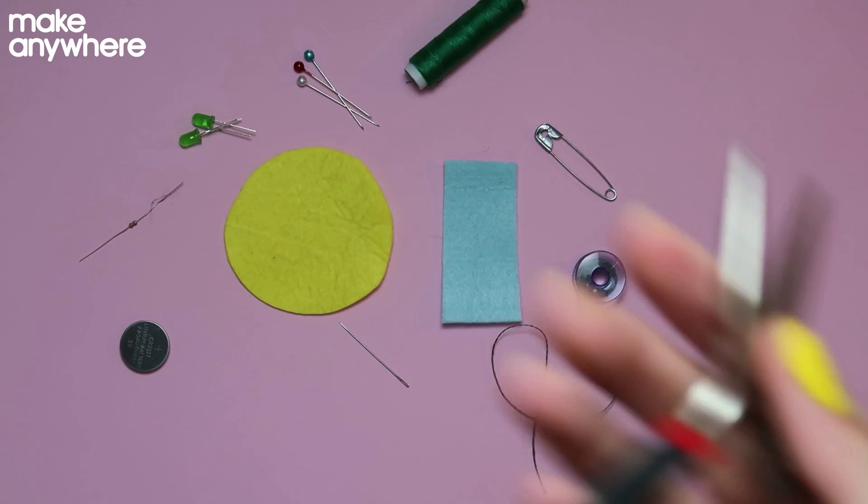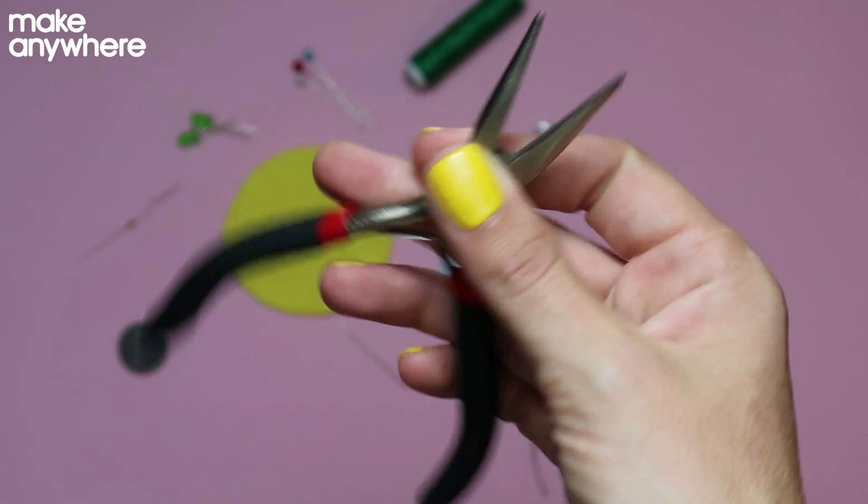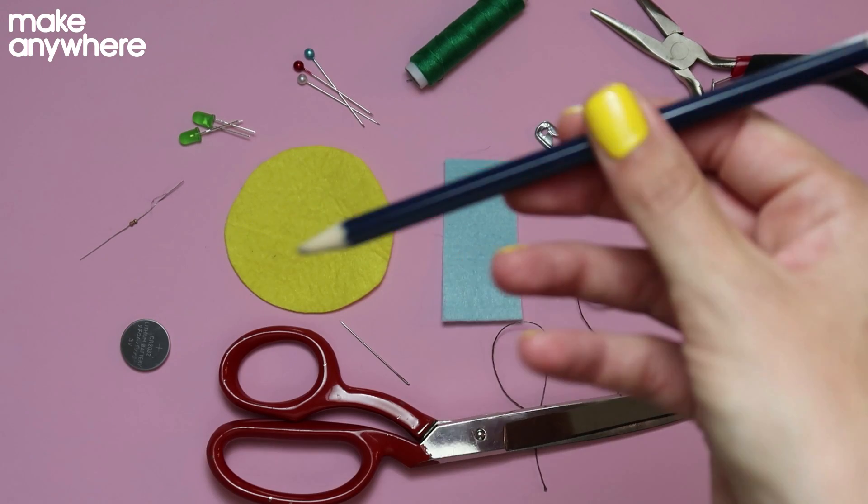For tools, you'll need pliers to twist the legs of your LED and resistor, some scissors and a pencil.